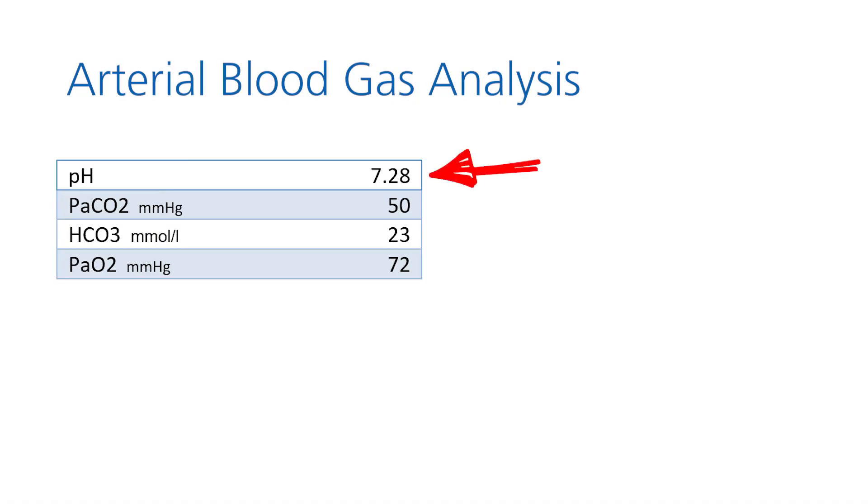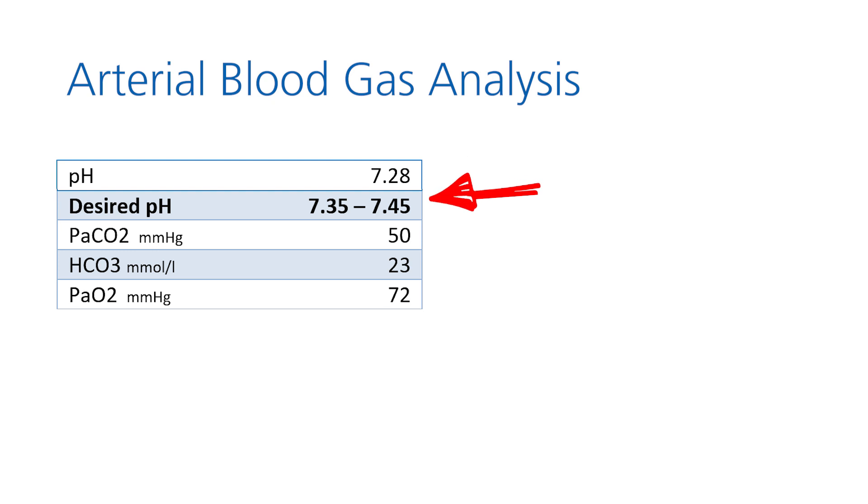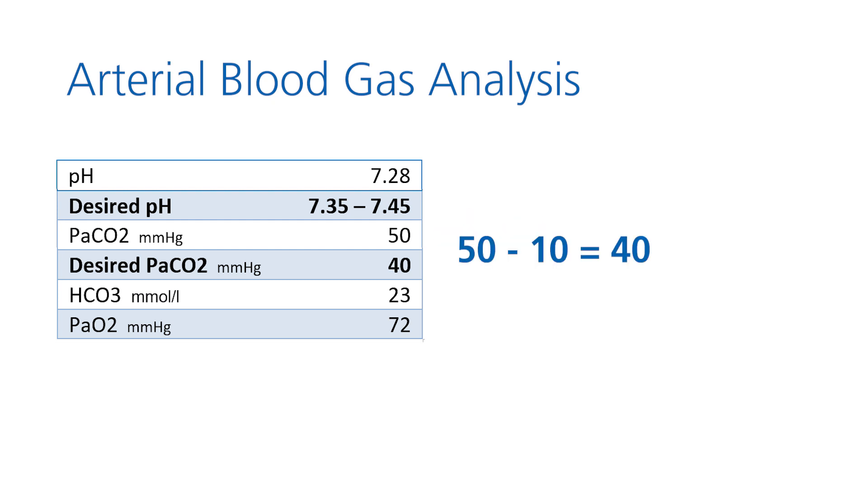The pH of 7.28 is below the clinical goal of between 7.35 and 7.45. Assuming a stable PaCO2 PET CO2 gradient, we should aim for a PaCO2 value of 40 mmHg to increase the pH level. As PaCO2 is currently at 50 mmHg, we need to reduce the PET CO2 target range by 10 to bring PaCO2 down to 40.